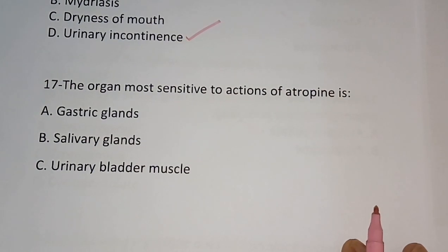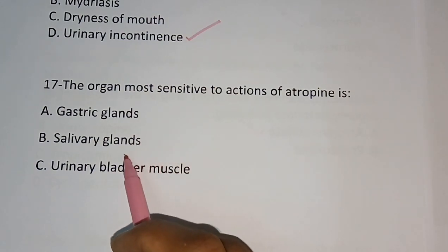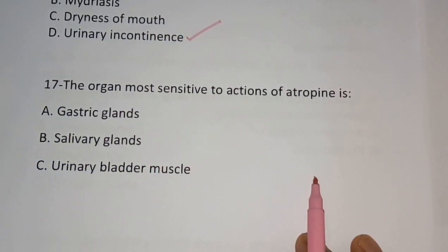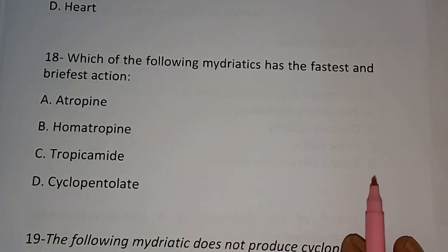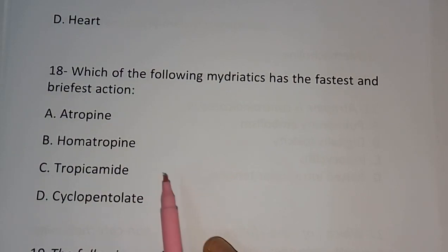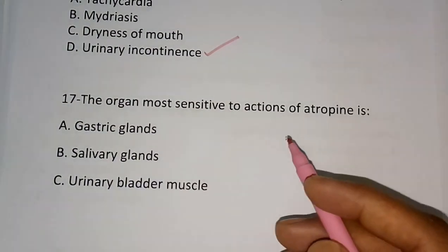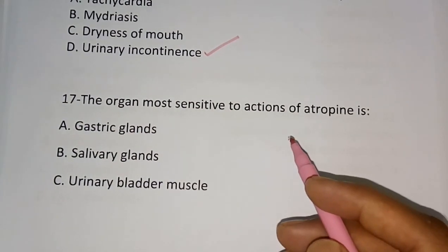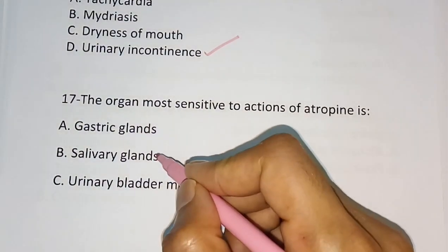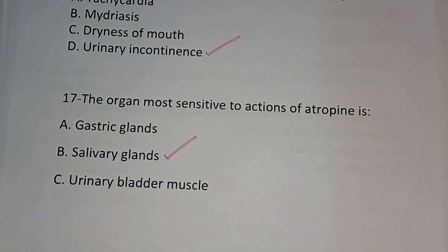Question number seventeen: The organ most sensitive to the action of atropine is — (A) gastric gland, (B) salivary gland, (C) urinary bladder muscle, (D) heart. The correct answer is salivary glands.